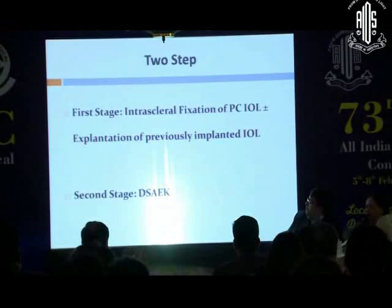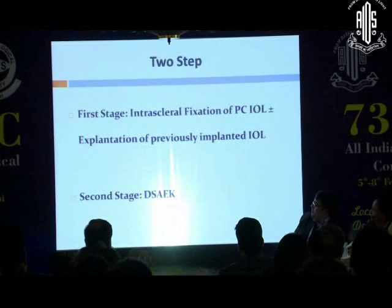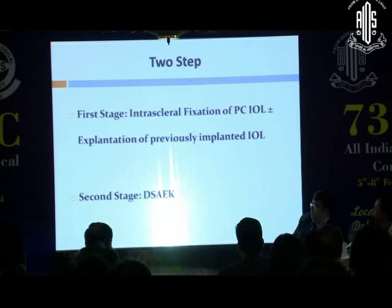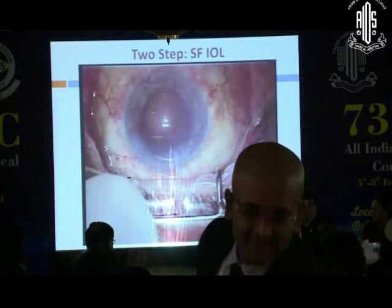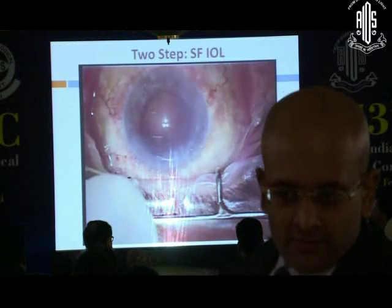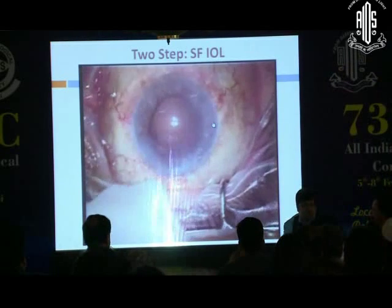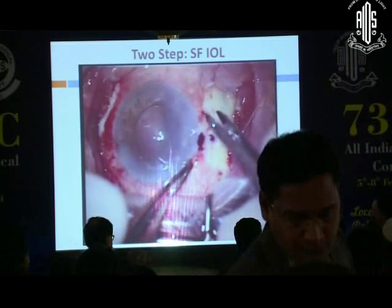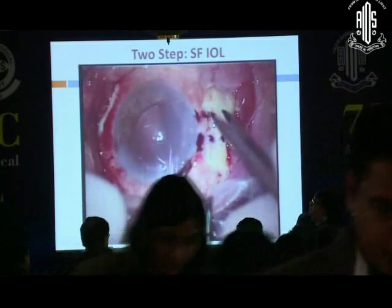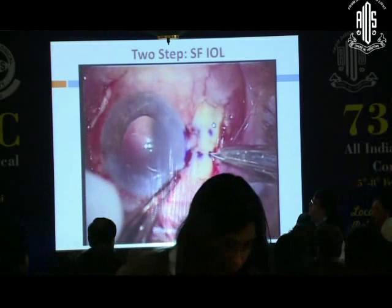You can also do a two-step procedure wherein you have a lot of inflammation, because you don't want to jeopardize the success of the graft. In a case where there is too much synechiae, fibrosis, and vascularization, it's always better to get the eye stable and reaction-free, so that when you place the donor lenticule, there is minimal damage to the corneal endothelium.